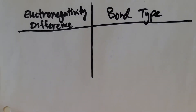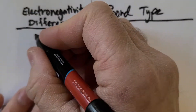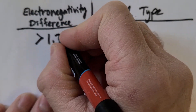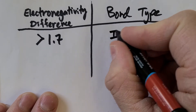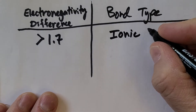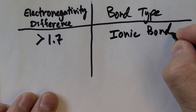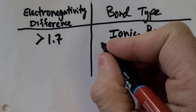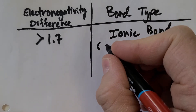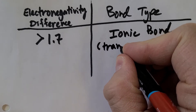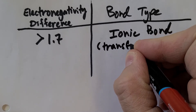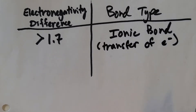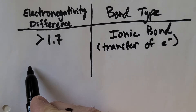If the difference in electronegativity is greater than 1.7, it's an ionic bond. An ionic bond deals with a complete transfer of electrons.